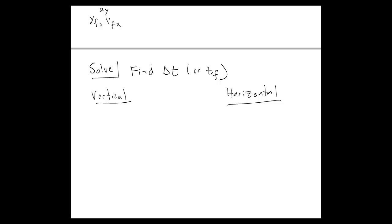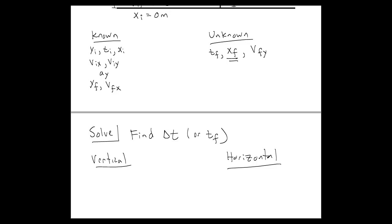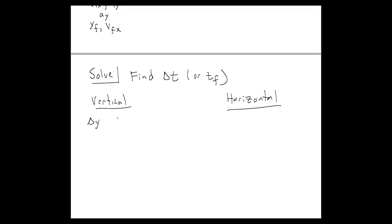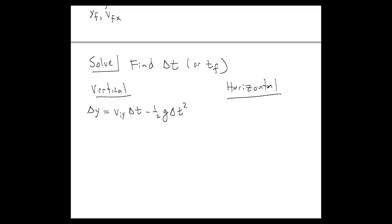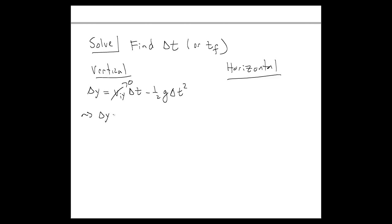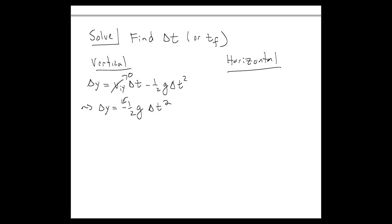Let's first look at the vertical. We want to find delta t. We know the initial y position, the final y position, the initial y velocity, and the acceleration in the y direction. Looking at our equation sheet, we use: delta y = v_iy · delta t − (1/2) · g · delta t². Since the initial y velocity is zero, this simplifies to: delta y = −(1/2) · g · delta t². Notice this minus sign — it's okay because delta y is also negative here, since the ball is falling and has a negative vertical displacement.